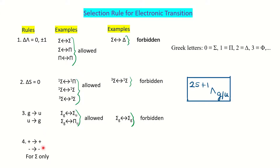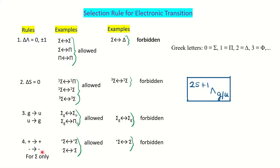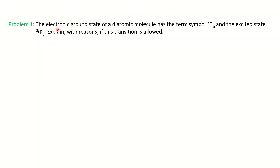The fourth rule concerns the +/− classification, which applies only to Σ states. Σ⁺→Σ⁺ and Σ⁻→Σ⁻ transitions are allowed, while Σ⁺→Σ⁻ or Σ⁻→Σ⁺ are forbidden. This +/− classification refers to reflection symmetry with respect to a plane containing the molecular axis, while the g/u classification refers to inversion symmetry.